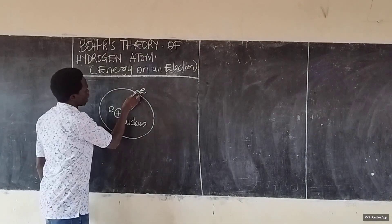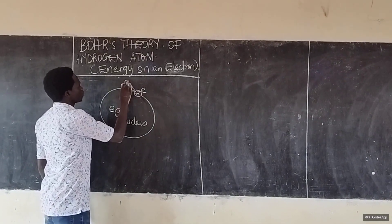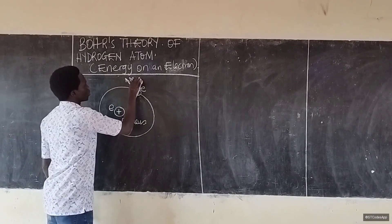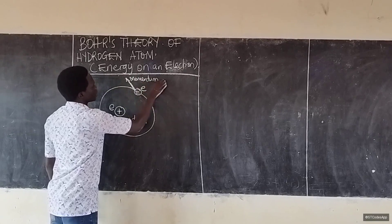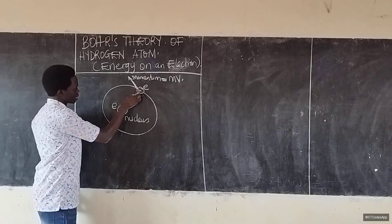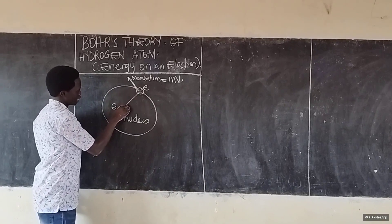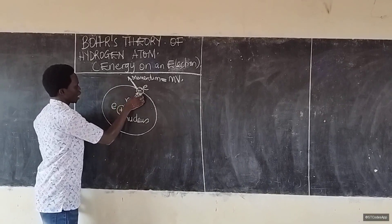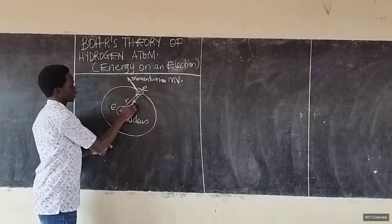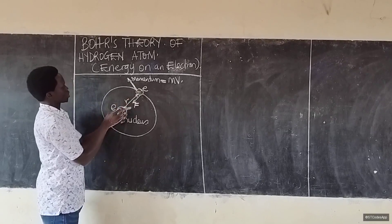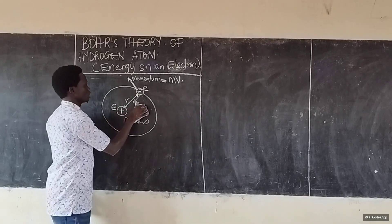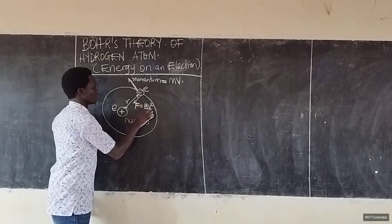We shall have this electron moving. What keeps it moving is its momentum. The momentum of this electron, and the distance between the nucleus and the electron we can call it r. The force that keeps the electron attracted towards the nucleus is the force of attraction, and we have the centripetal force which is mv² over r.